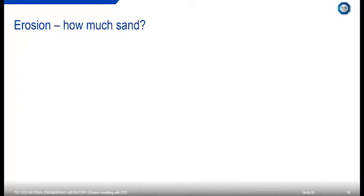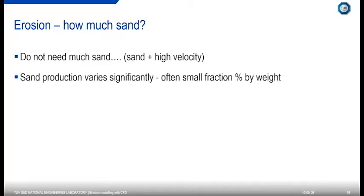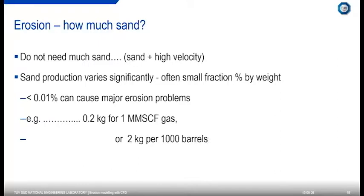How much sand do we need? We don't actually need that much. If we have quite a high velocity gas and a little bit of sand, that can cause significant issues. Sand production varies significantly and is often only a small fraction percentage by weight. Less than 0.01% can cause major erosion problems. For example, 0.2 kilograms per million standard cubic feet of gas, or 2 kilograms per 1,000 barrels. Generally, sand content is in the range of 1 to 50 parts per million by weight, but can cause significant issues even at that.